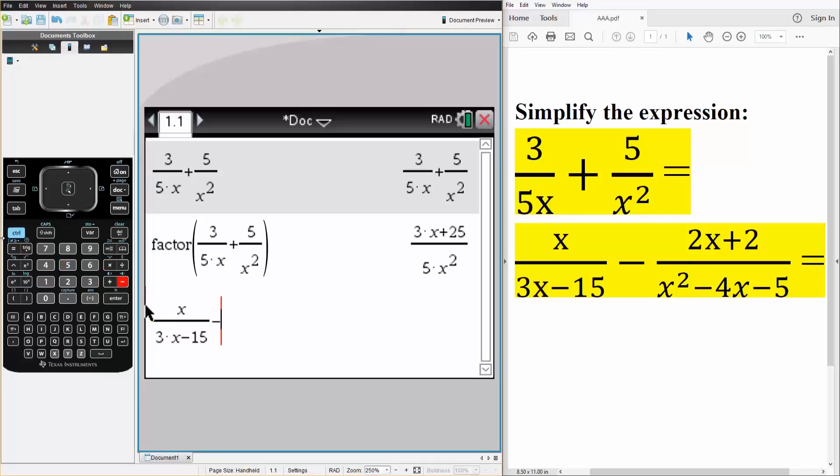We hit ctrl division, we have 2 times x plus 2 divided by x squared minus 4 times x minus 5. We hit enter.